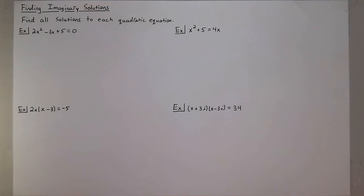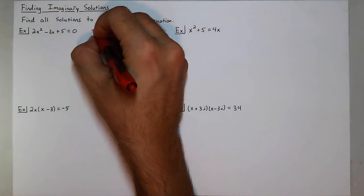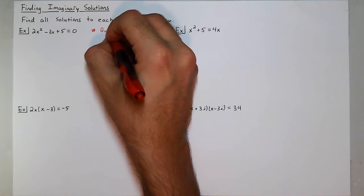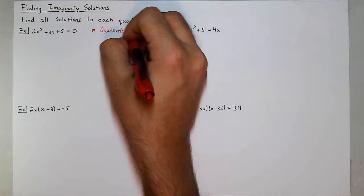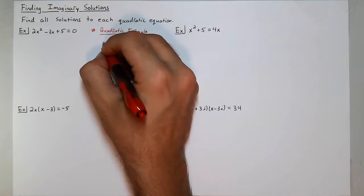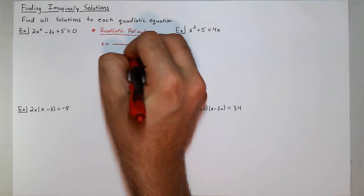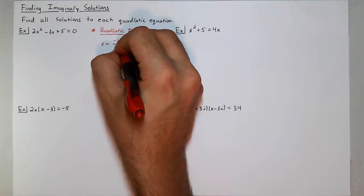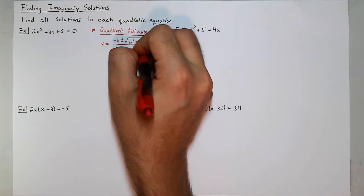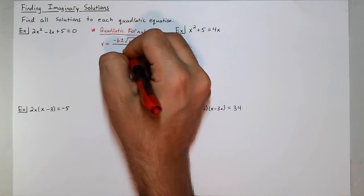So I'm going to have to use the quadratic formula which just to go over again: the quadratic formula is x equals the fraction negative b plus or minus the square root of b² minus 4ac all over 2a.